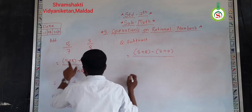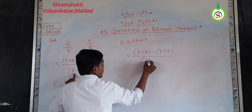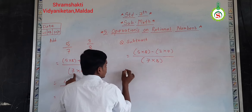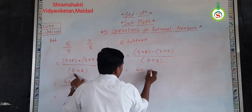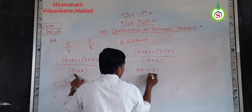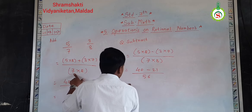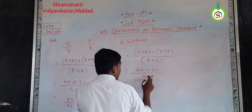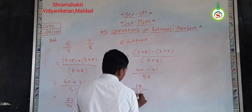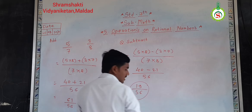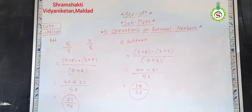And the denominator, like the addition, I will take the multiplication of the denominator. So, seven into eight. So, five eights are forty minus three sevens are twenty-one, divided by eight sevens are fifty-six. So, forty minus twenty-one — answer is nineteen. Nineteen divided by fifty-six is our answer. And for the addition, sixty-one by fifty-six is our answer.